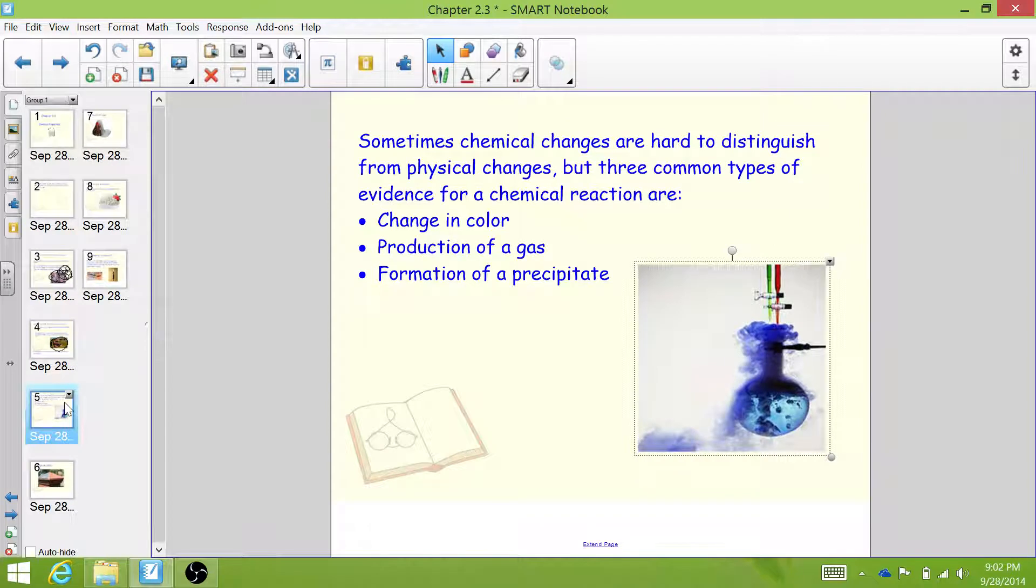Sometimes chemical changes are hard to distinguish from physical changes, but there are three common types of evidence for a chemical reaction. These are a change in color, the production of a gas, and the formation of a precipitate, which is a solid that comes out of any kind of liquid mixture. There's also the transfer of heat, but that gets a little complicated, so we're going to leave that for the discussion of another time.